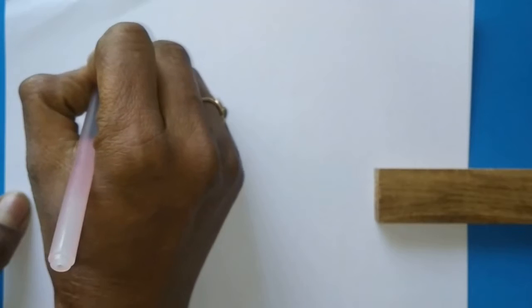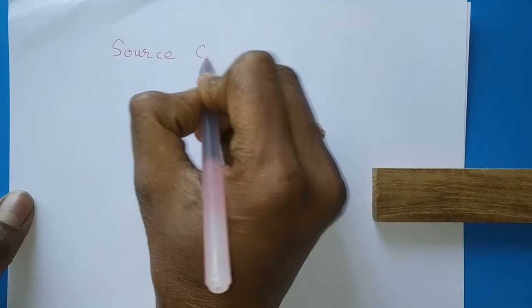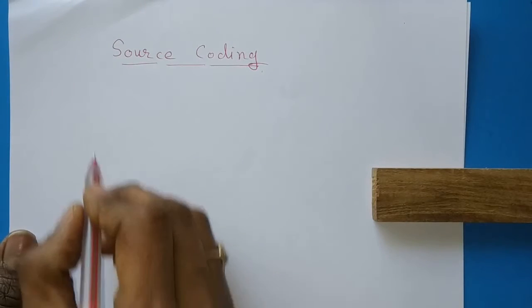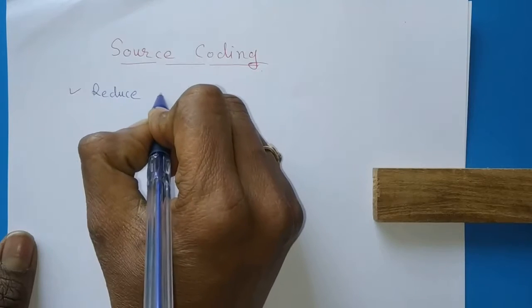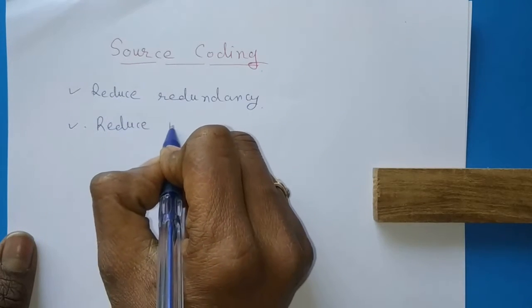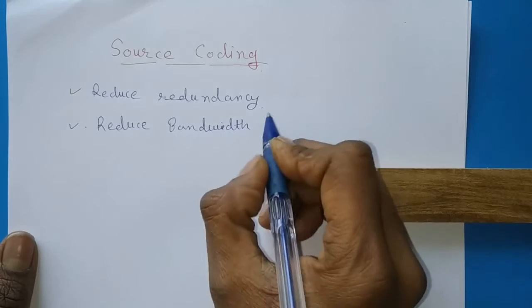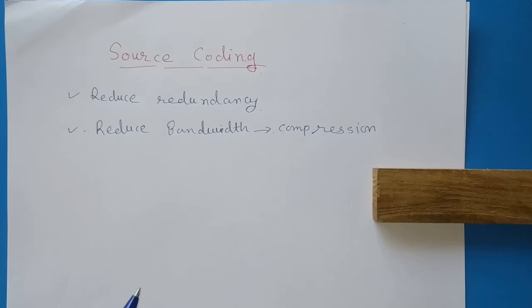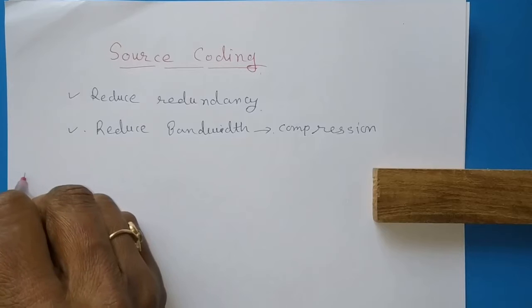In the previous video we discussed the difference between source coding and channel coding, and why we need them. Today we will discuss source coding techniques. Source coding is used to reduce redundancy and bandwidth, which ultimately achieves compression when sending data on a communication channel.